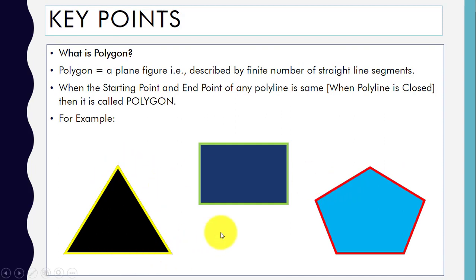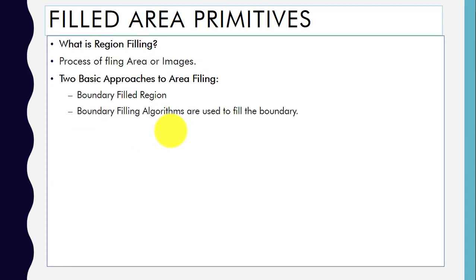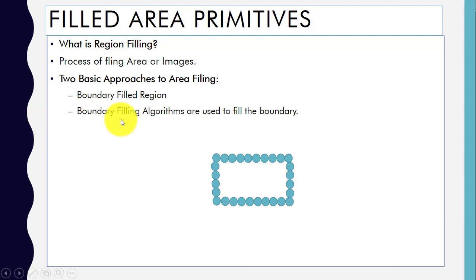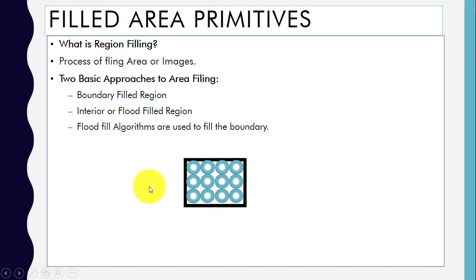You can see examples of polygons here — for all these figures the starting point and endpoint are the same. Next is filled area primitives. Region filling is the process of filling an area or image. We have two approaches: boundary filled region and interior or flood filled region. Boundary filling algorithms fill the boundary, while flood fill algorithms fill the interior of a figure.